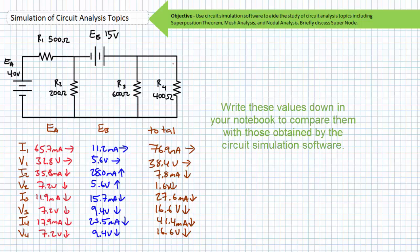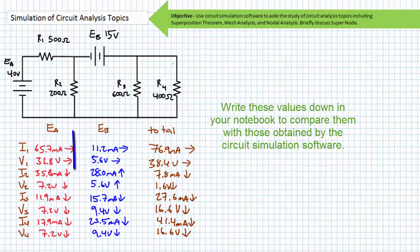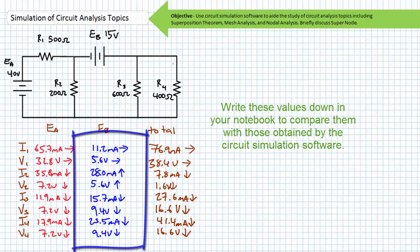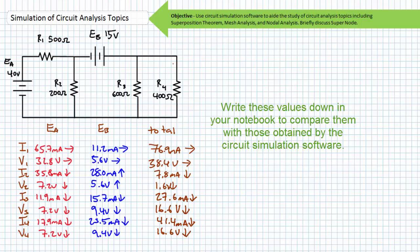Now we'll go ahead and build and simulate this circuit using MultiSim. First we'll simulate it from the perspective of EA with EB removed. Then we'll simulate it from the perspective of EB with EA removed. And finally we'll simulate it with both sources active. The values we obtain through our simulation software should be very close to those obtained by manual calculation methods.